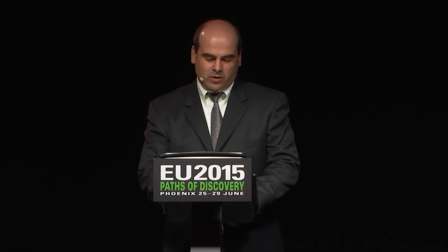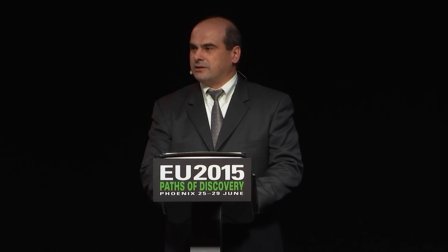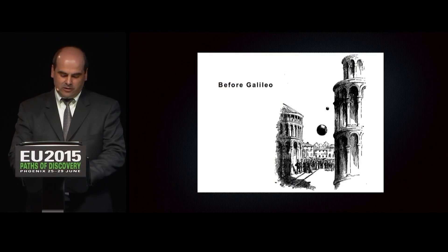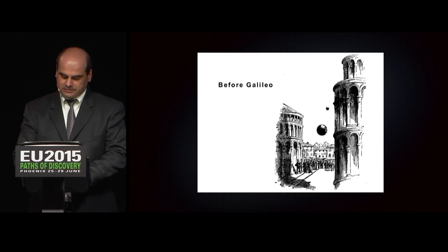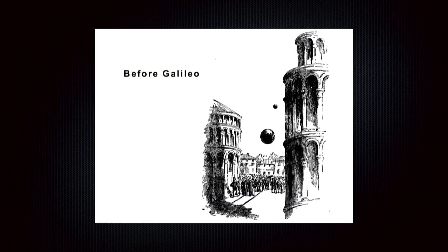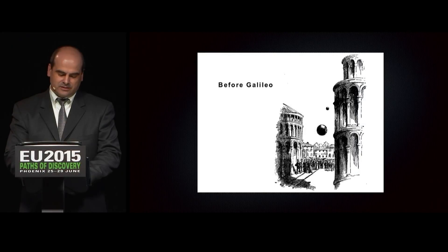Galileo's hypothesis was that on Earth, all objects fall at the same rate. But prior to this, most people thought that the heavy ball should drop faster. Galileo found that his hypothesis was correct, but the big question became: why are they dropping at the same rate? It was not until Sir Isaac Newton defined the law of gravity that scientists started to understand why the balls fell at the same rate.